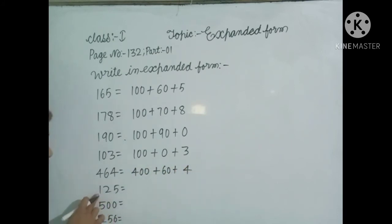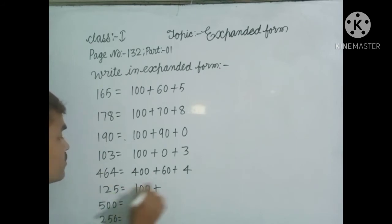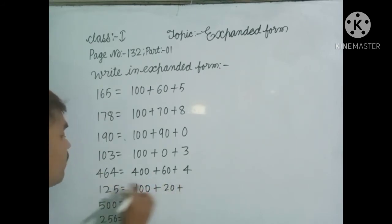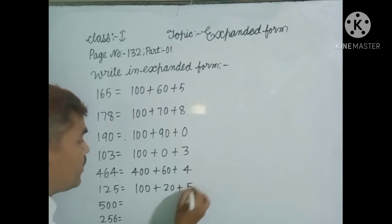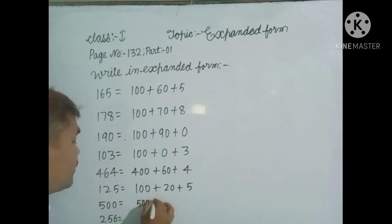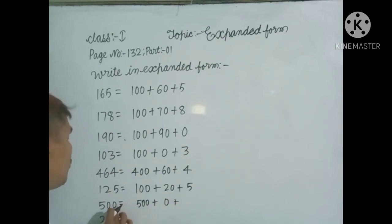Next question: the hundreds digit is 1, so write down 100, plus 2 tens means 20, plus 5 ones means 5. Next, the hundreds digit is 5, so write down 500. The tens digit is 0 tens, so write down 0, and the ones digit is 0 ones, so write down 0.